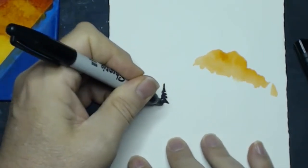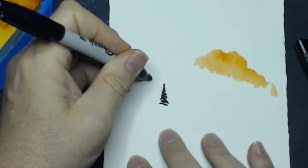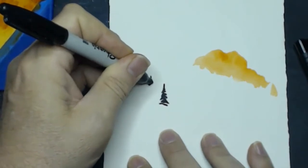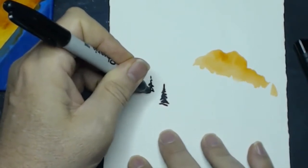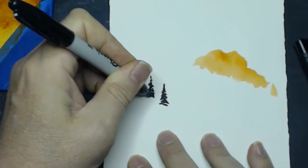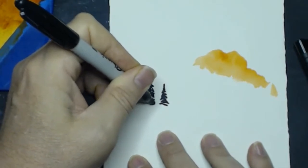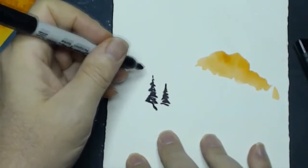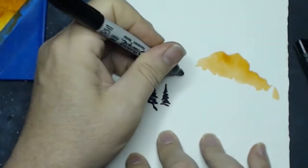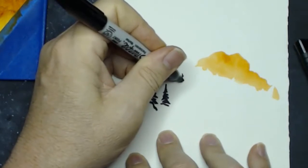I'm pretty much doing evergreen trees or pine trees, whatever. But the shape is really simple. It's pretty much just a triangular shape. I'm just starting at the top and working those branches out a little wider as I go down. And that's really pretty much all there is to it.